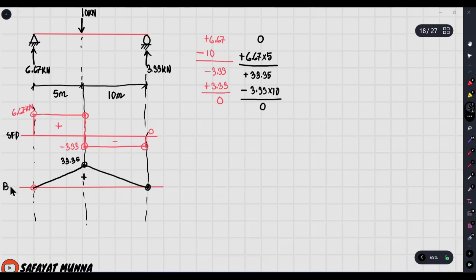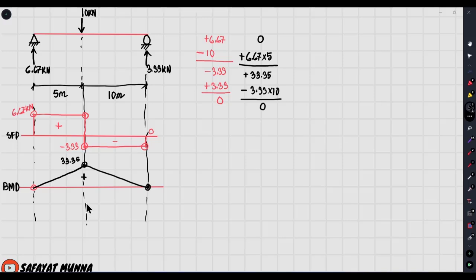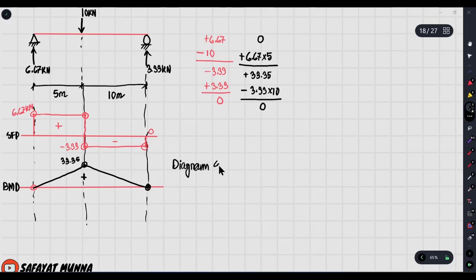The SFD and BMD diagrams are our final target. There are many conventions for drawing these diagrams; some take positive upward, others downward. The convention followed here is that diagrams are drawn on the compression side of the beam.